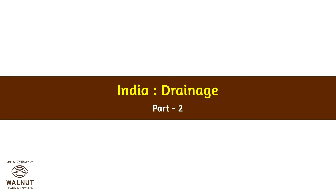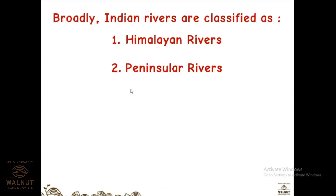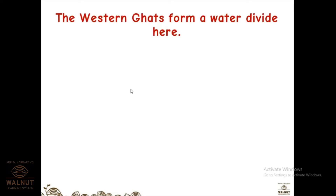Good morning students. We'll continue with our chapter on India's drainage system. Last period we covered how it flows and the classification of Indian rivers as Himalayan rivers and peninsular rivers. We had seen the three major Himalayan rivers — Indus, Ganga, and Brahmaputra. Ganga and Brahmaputra flow to the eastern part and meet the Bay of Bengal, while Indus meets the Arabian Sea. Today we are going to see the peninsular rivers.